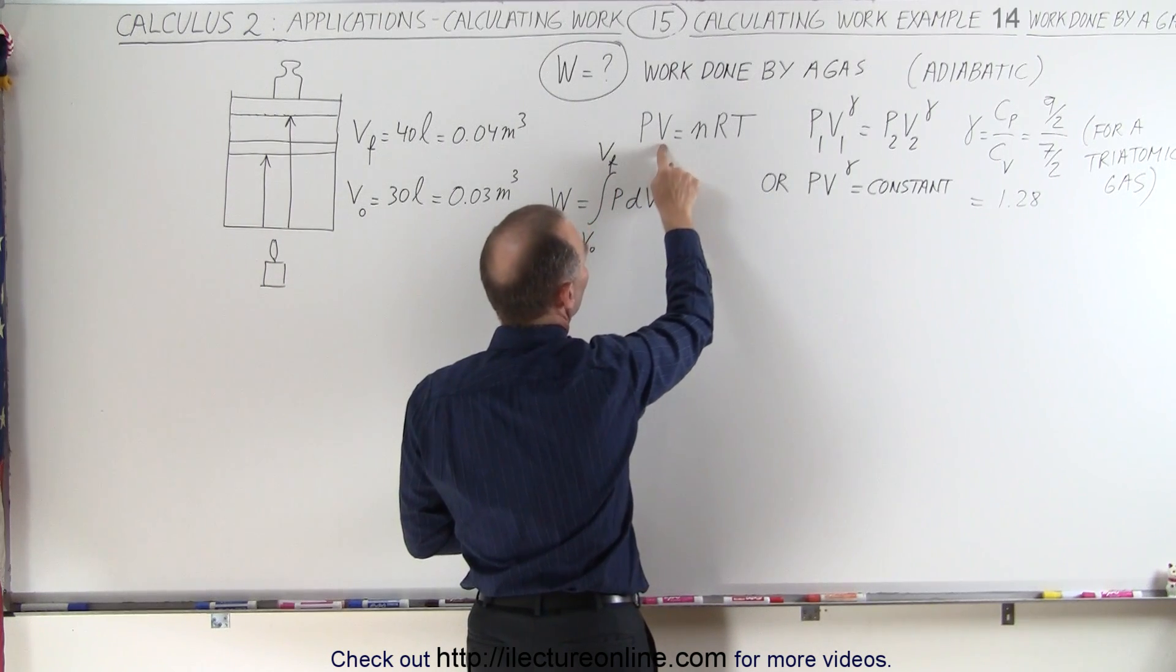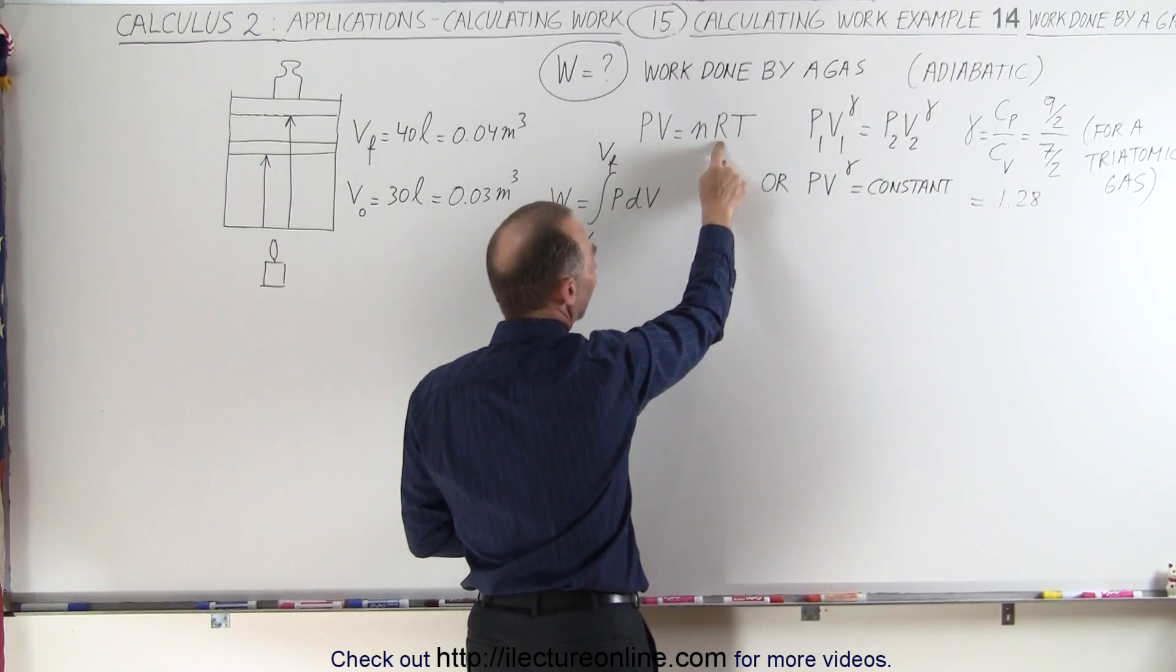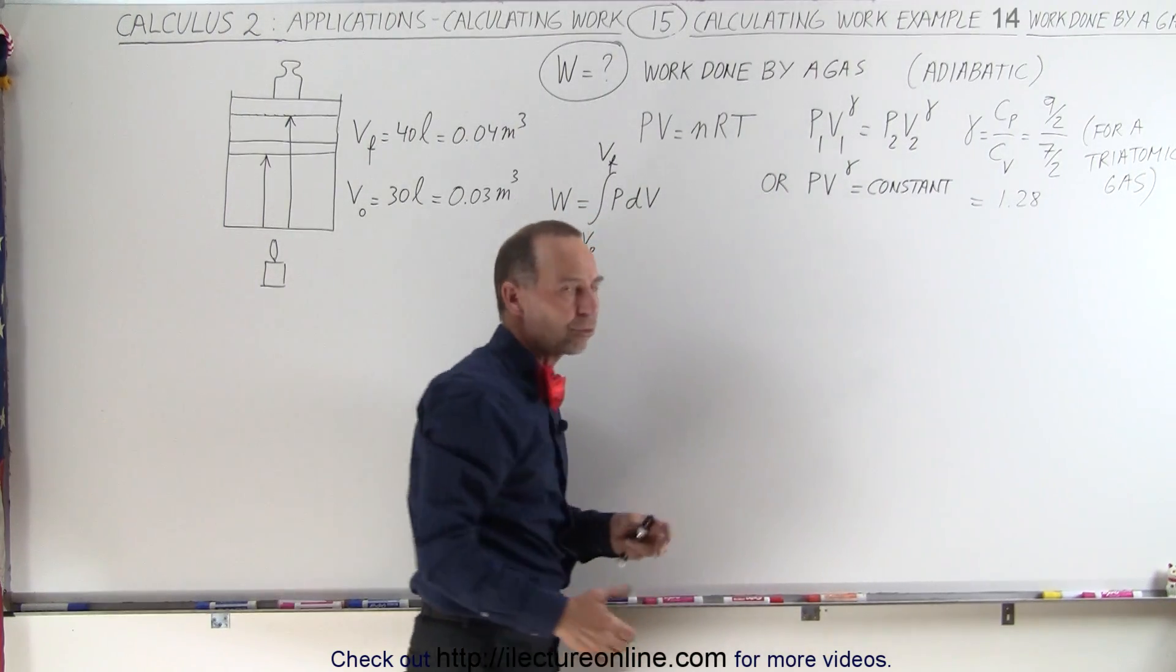p is the pressure, v is the volume, n is the number of moles, R is the gas constant, and T is the temperature in Kelvin.